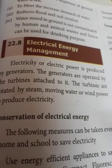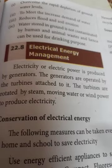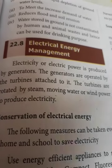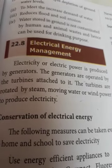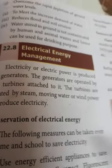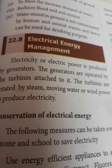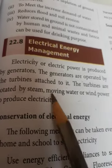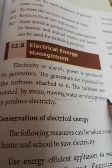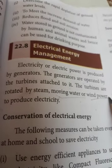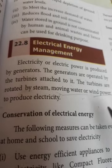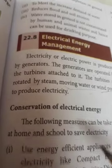Conventional sources of energy such as coal: by burning coal it can boil water, producing steam, and the coal is utilized to generate electricity. Moving water is called water energy. Wind power is called wind energy. These are the different methods and ways to produce electricity.